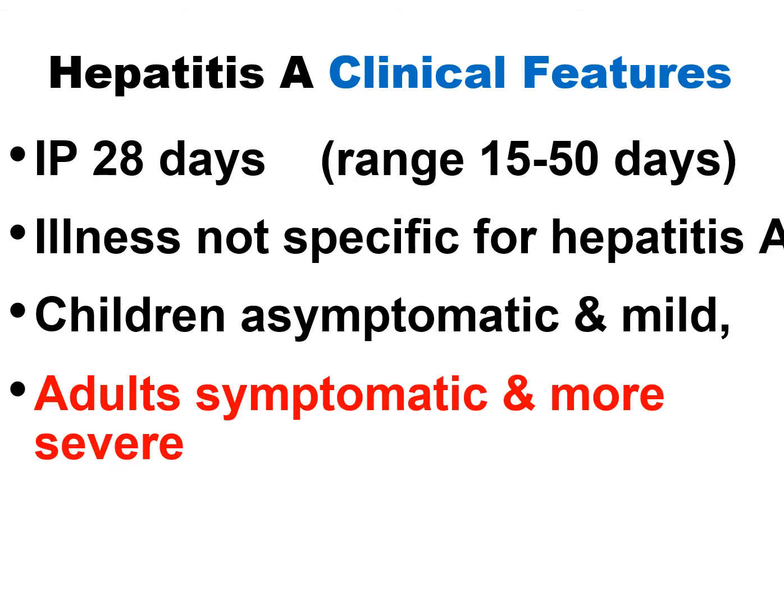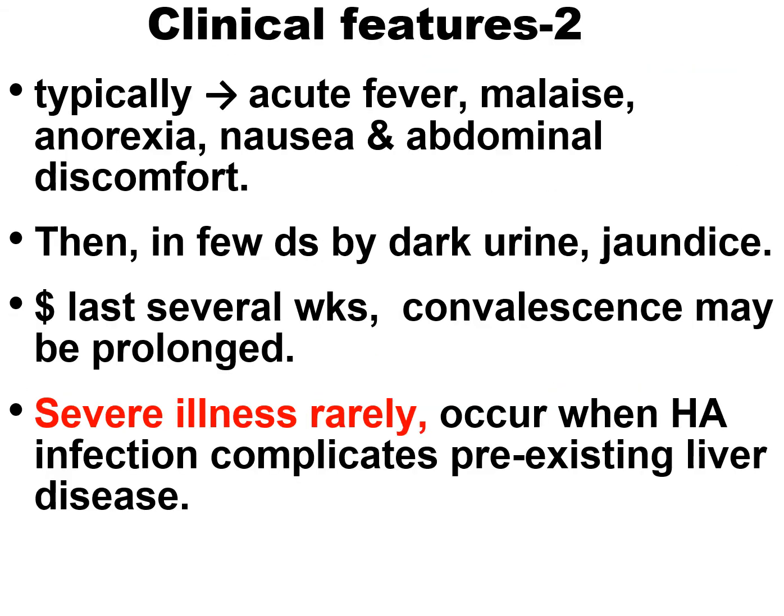Clinical features: Incubation period about 30 days. Illness is not specific for Hepatitis A. In children: asymptomatic and mild. In adults: symptomatic and more severe. Symptoms typically lead to acute fever, malaise, anorexia, nausea, and abdominal discomfort, then after a few days: dark urine and jaundice.